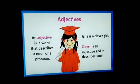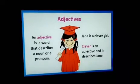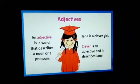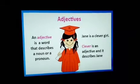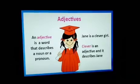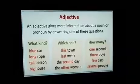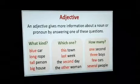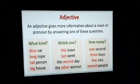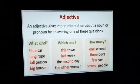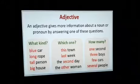For example, Jenny is a noun. But when we say 'Jenny is a clever girl,' the word clever describes more about the noun Jenny. An adjective gives more information about a noun or a pronoun by answering one of these questions: What kind? Which one?